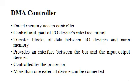Although it transfers data without intervention of the processor, it is controlled by the processor. The processor initiates the DMA controller by sending the starting address, number of words in the data block, and direction of transfer of data — for example, from I/O devices to the memory, or from main memory to the I/O devices. More than one external device can be connected to the DMA controller.